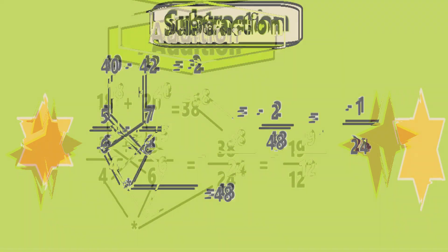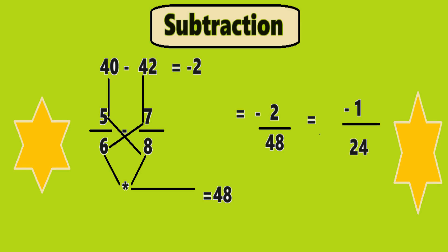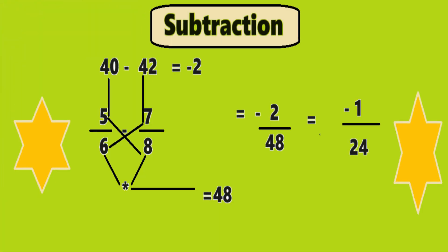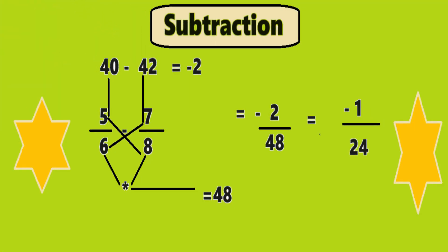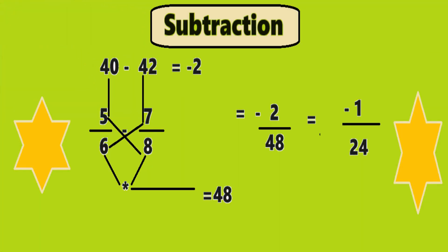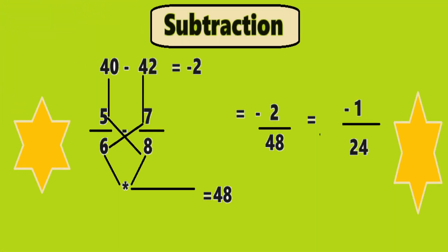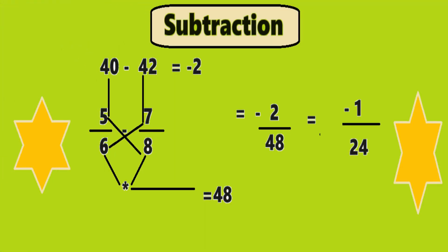Now let us take the fraction subtraction. The process of subtraction is the same as addition, but instead of adding we have to subtract. First example — let us take 5 by 6 minus 7 by 8. Cross multiply: 5 into 8 which is equal to 40, now 6 into 7 which gives us 42. Now subtract 40 minus 42 which will give the resultant minus 2, which is the numerator. Now multiply the denominator: 6 into 8 which will give us 48, and that becomes the denominator. So the answer is minus 2 divided by 48, and that gives us minus 1 divided by 24. That's it.